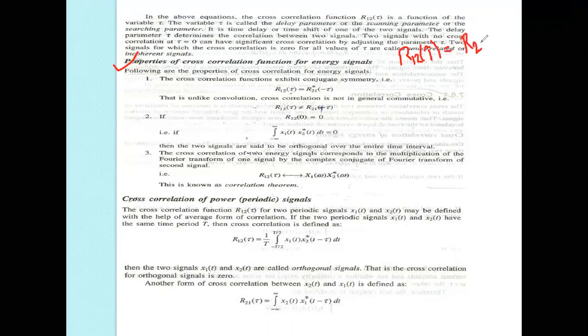Let us see the properties of cross correlation for energy signals. The first property is that cross correlation exhibits conjugate symmetry: R12(τ) = R21*(−τ). Unlike convolution, cross correlation is not in general commutative. When the two signals are interchanged, a sign change in the argument occurs.